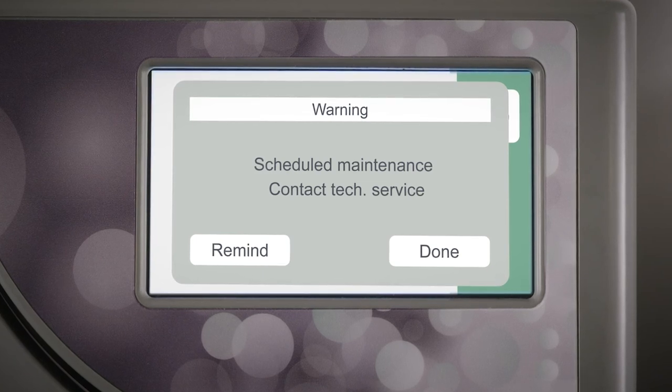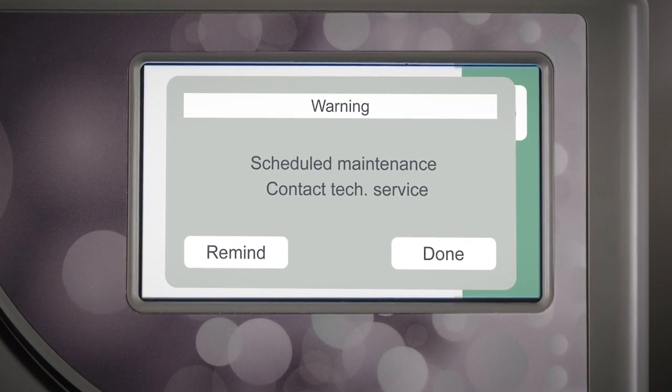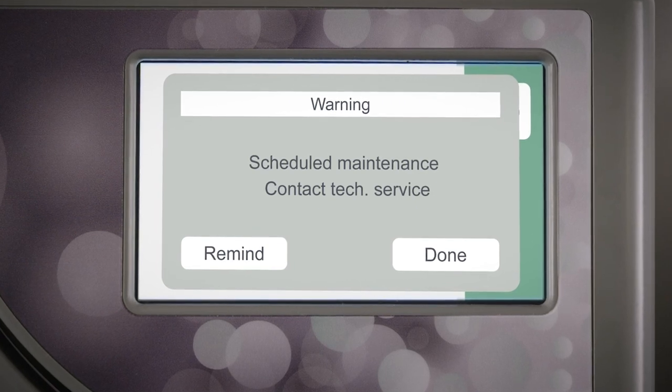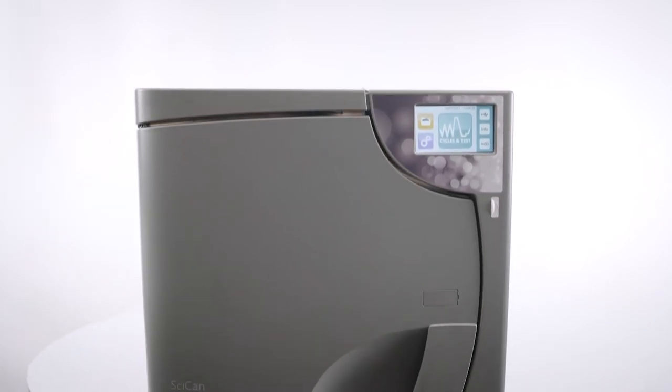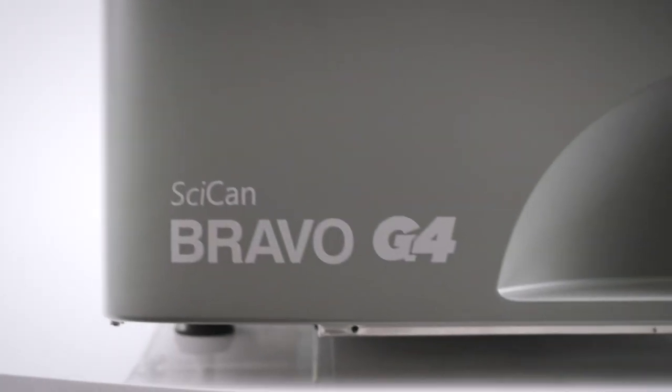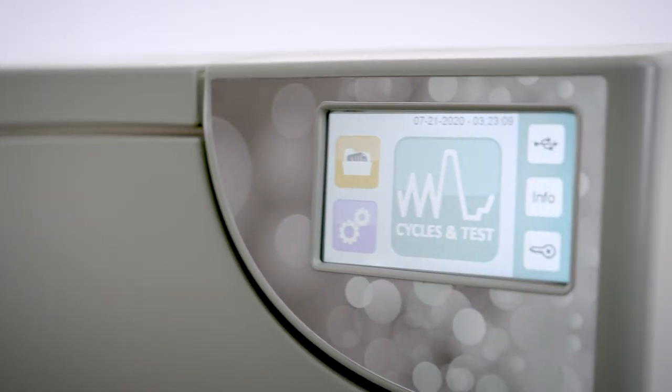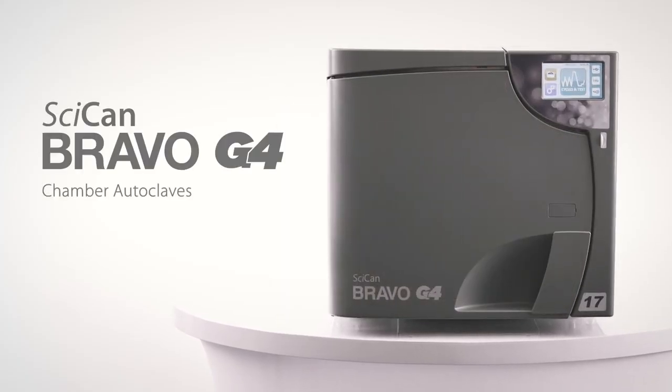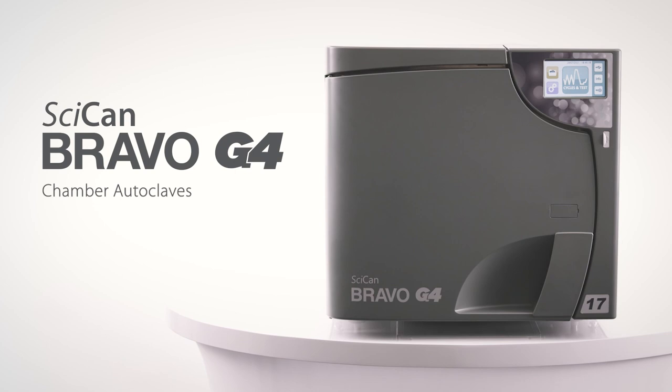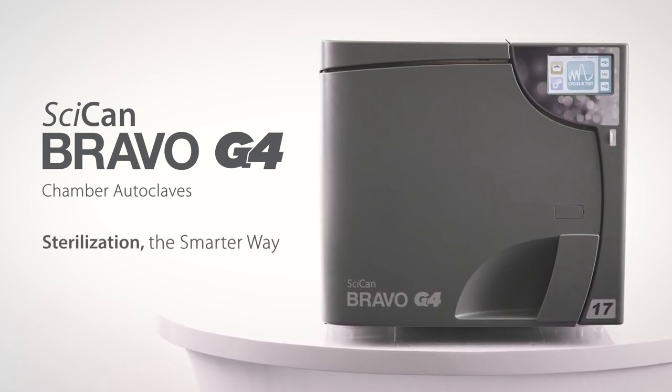The Bravo G4 will also display an automatic maintenance warning message for general service every 3000 cycles, which is roughly every three years. Additional details about installing, operating and maintaining your Scican Bravo G4 are all contained within the operator's manual. Please read these instructions before operating this unit and keep them for future reference. Thank you again for making the Scican Bravo G4 part of your sterilization upgrade. Bravo G4 sterilization, the smarter way.